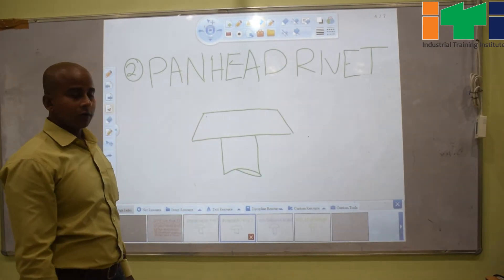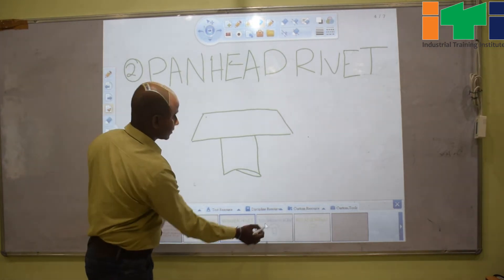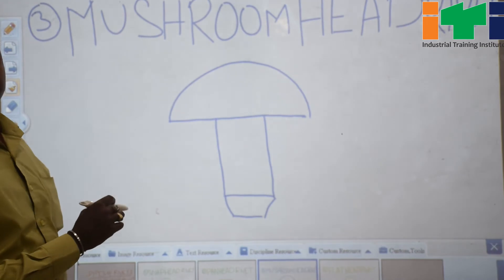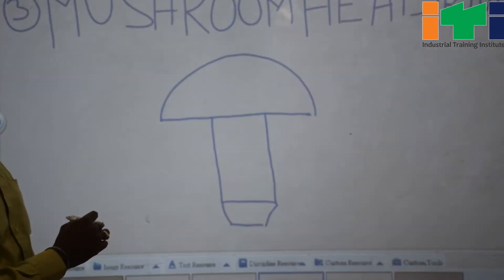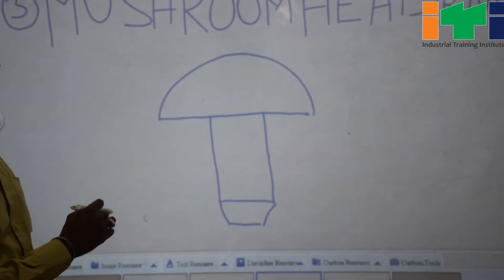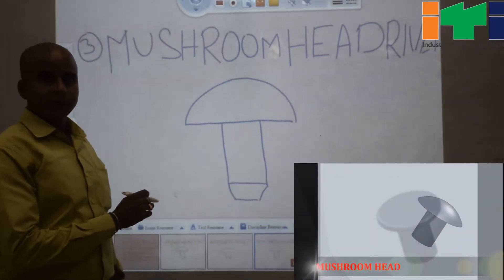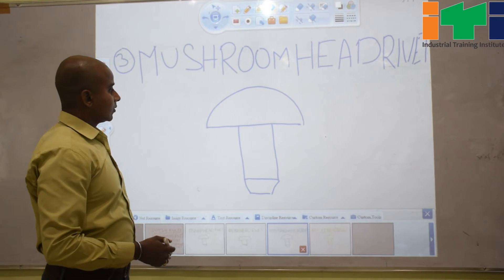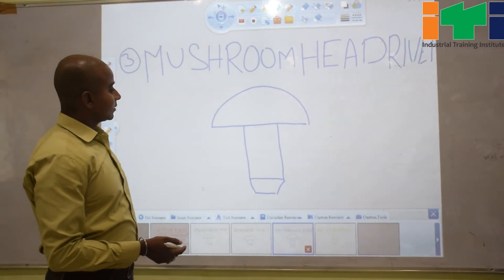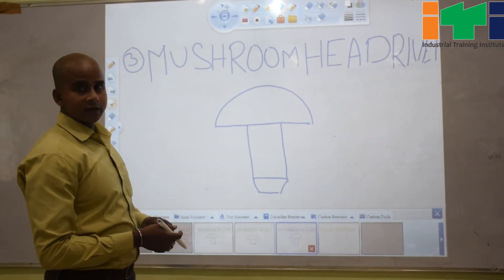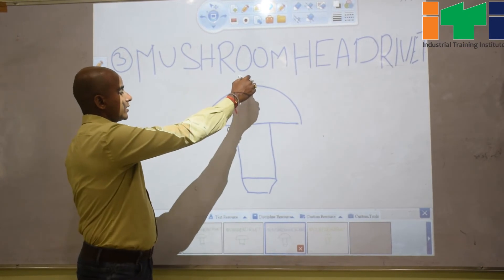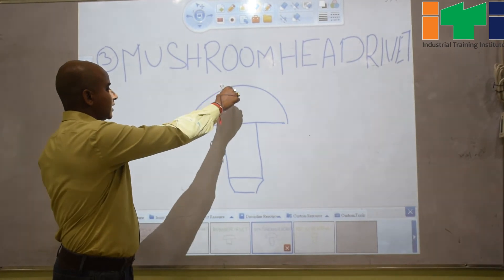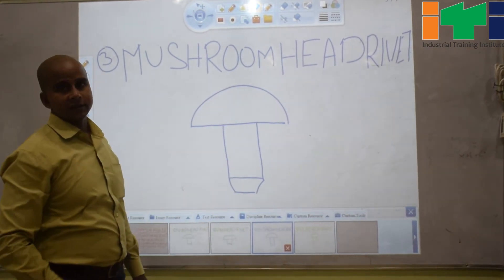Then we go to the third one, which is mushroom head rivet. Mushroom head rivet is designed to reduce the height of the rivet where we join the two metal pieces together. When we join using the head of the rivet, the rivet holds the metal sheets strongly and rigidly.